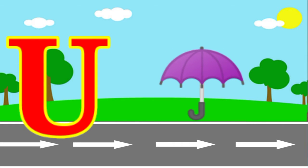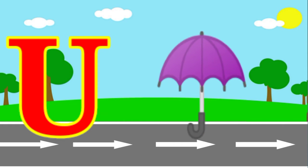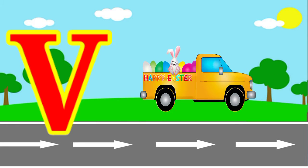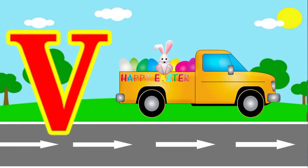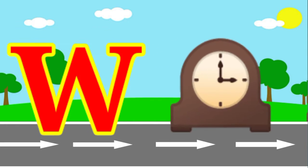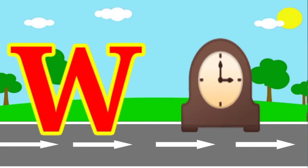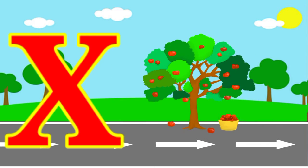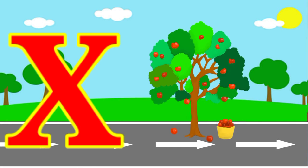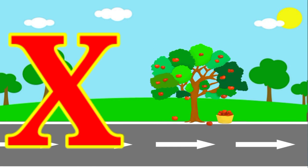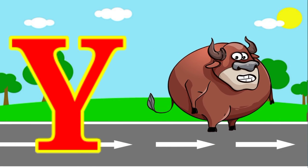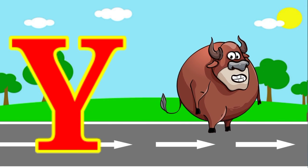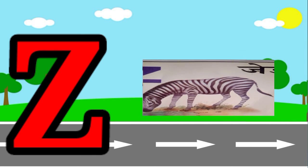U for Umbrella. V for Van. W for Goats. X for Xmastry. Y for Yak. Z for Zebra.